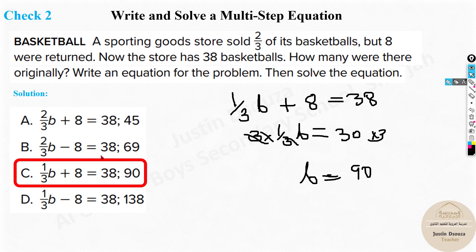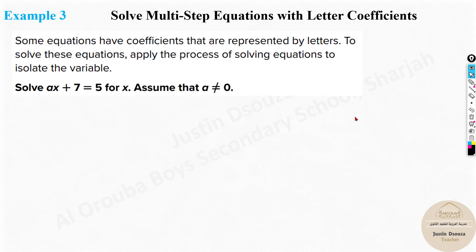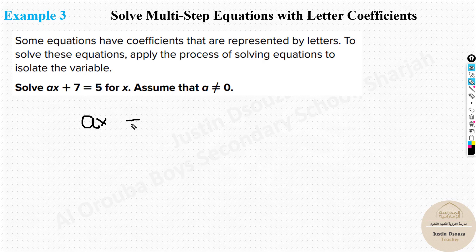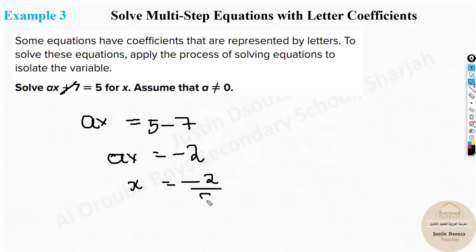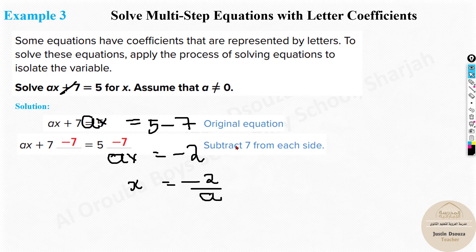Now there are equations where the coefficient is also an unknown variable. You can't solve these on the calculator — you must solve manually. For example: ax + 7 = 5. Subtract 7 from both sides: ax = 5 - 7 = -2. Then take a to the other side by dividing: x = -2/a. That is the answer.